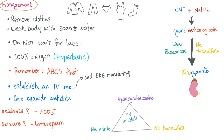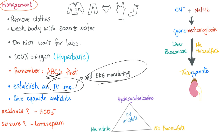To manage cyanide poisoning: first, remove the patient's clothes — cut them off quickly, don't waste time — because cyanide can be absorbed through the skin. Wash the body with soap and water. Do not wait for labs if you suspect cyanide — treat it. Give 100% oxygen, then try hyperbaric oxygen. Remember your ABCs: airway, breathing, circulation. Establish an IV line and continuous EKG monitoring.